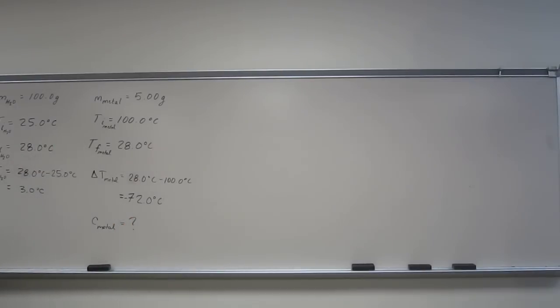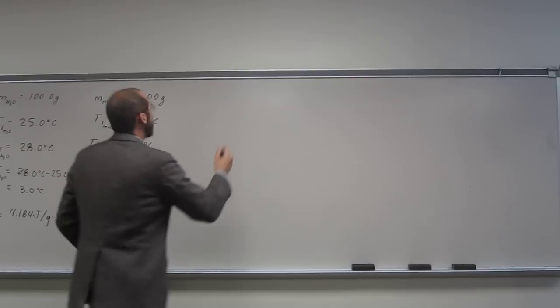And given to you always is going to be the specific heat capacity of water, which is 4.184 joules per gram degrees Celsius. So you won't have to remember this. I just know this because I've done so many of these things. Essentially you're just going to set this side equal to the negative of this side and go.